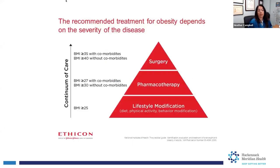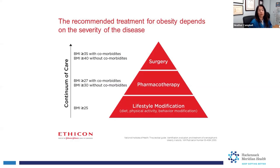How do we treat obesity? It depends upon the level of obesity. If you're just overweight with a BMI between 25 and 30, then it's all about lifestyle modifications — a good old-fashioned diet and exercise. But as you get higher on the BMI scale, you become a candidate for either surgery or medical weight loss. A BMI of over 27 will qualify you for medicines.